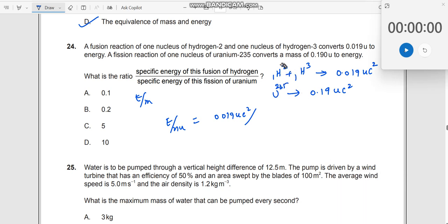Energy per nucleon in the first case should be 0.019Uc² divided by 2 plus 3, which is 5. Why 5? Because you see here there are two nucleons, one proton, one neutron. Here there are one proton, two neutrons. So totally there are five nucleons over here. So I will divide this by 5.